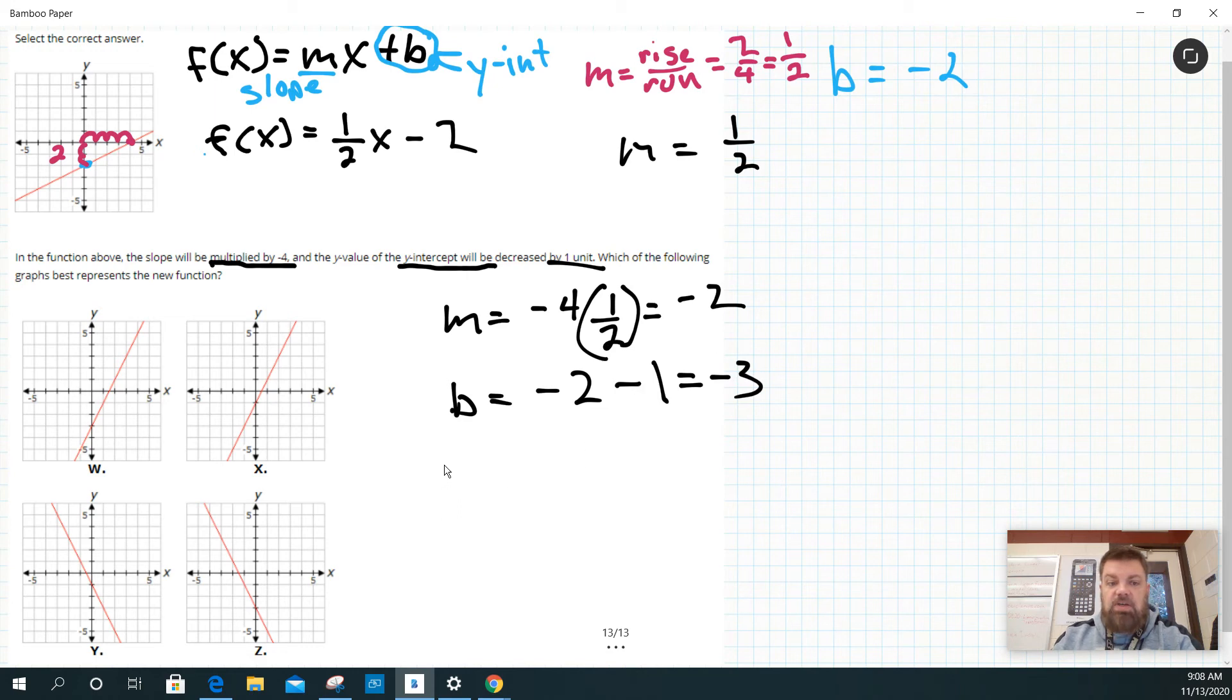So I've got a new equation down here that we'll call g of x. And g of x is going to be mx plus b, where m is the slope, which is negative two in this case, minus three, which is the y-intercept.